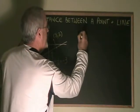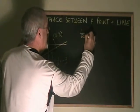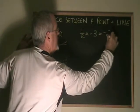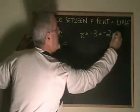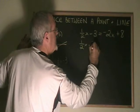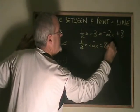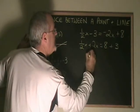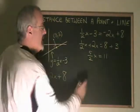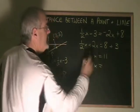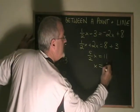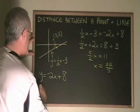I get half x minus 3 equals negative 2x plus 8. Half x plus 2x equals 8 plus 3. 5 halves x equals 11. x is therefore equal to 11 divided by 5 halves, which is 22 fifths. I have my x coordinate.